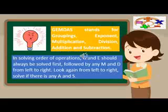In solving order of operations, G and E should always be solved first, followed by any M and D from left to right. Look again from left to right, and solve if there is any A and S.